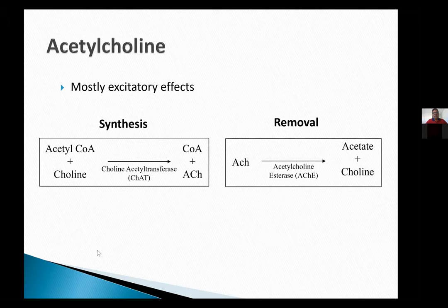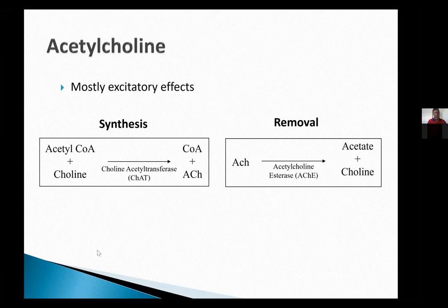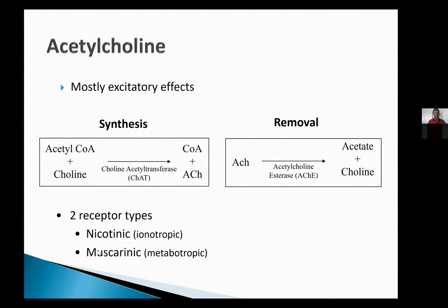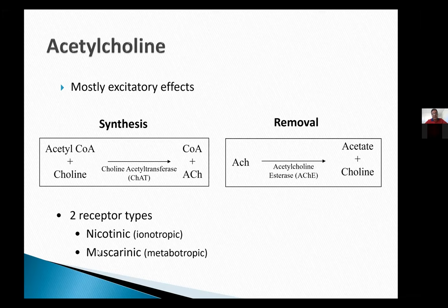There are two receptor types: nicotinic and muscarinic. Nicotinic receptors are ionotropic and muscarinic are metabotropic. One important point I should add: ionotropic receptors are fast-acting — when an electrolyte passes through the ion channel the effects are much more rapid than those mediated by metabotropic receptors. That is a major difference.